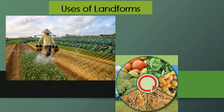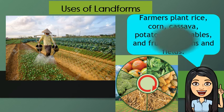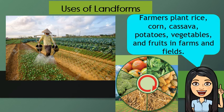Now let's discuss the uses of landforms. What can you see in our illustrations? Very good. Farmers plant rice, corn, cassava, potatoes, vegetables, and fruits in farms and fields. We get our food from plants or farms.